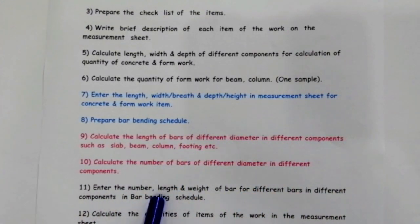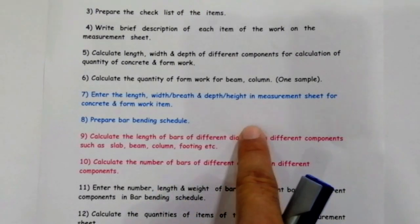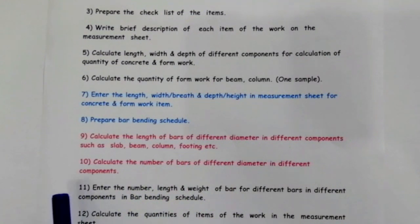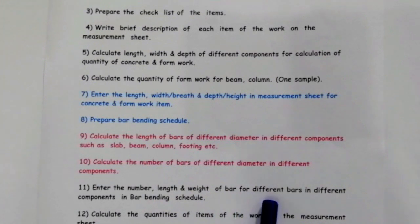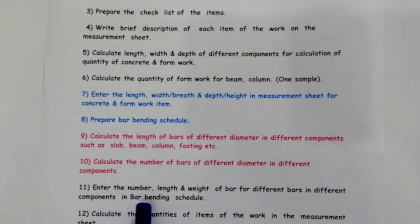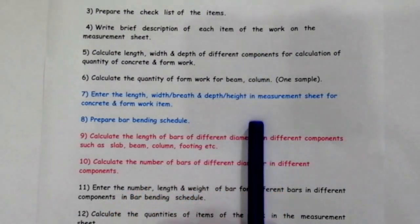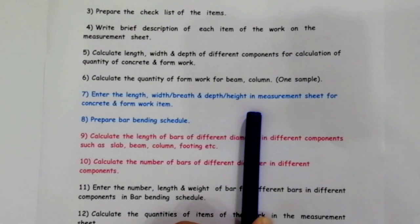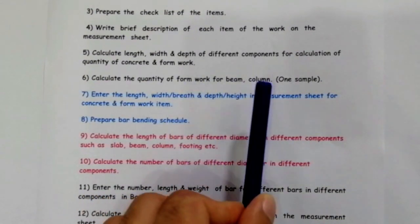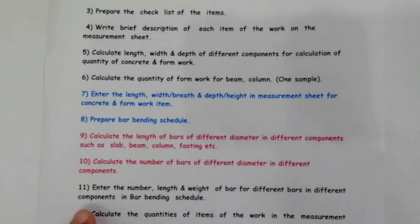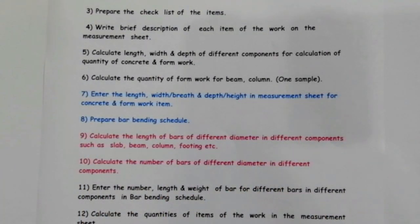Enter the number, length, and width of the bar for different bars and different components in the bar bending schedule. In the bar bending schedule we have columns for different diameters of steel bars — for 20mm, 10mm, 16mm — and in those columns you will put the diameter of steel bar for the different components.